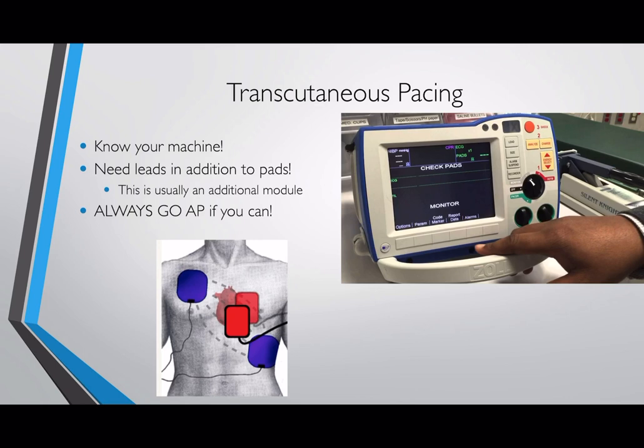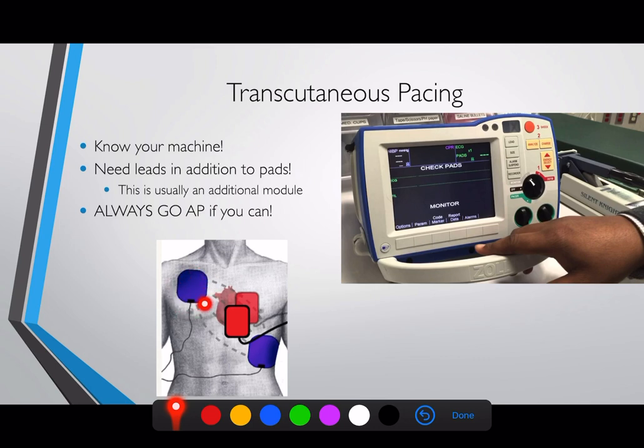Transcutaneous pacing is very simply giving electrical stimulations to the heart so that it triggers a beat. The way you do that is you put pads on. There are two — or really three — different orientations. The first is the classic one you see for cardiac arrest: one pad on the right pectoralis and one in the left axillary region.